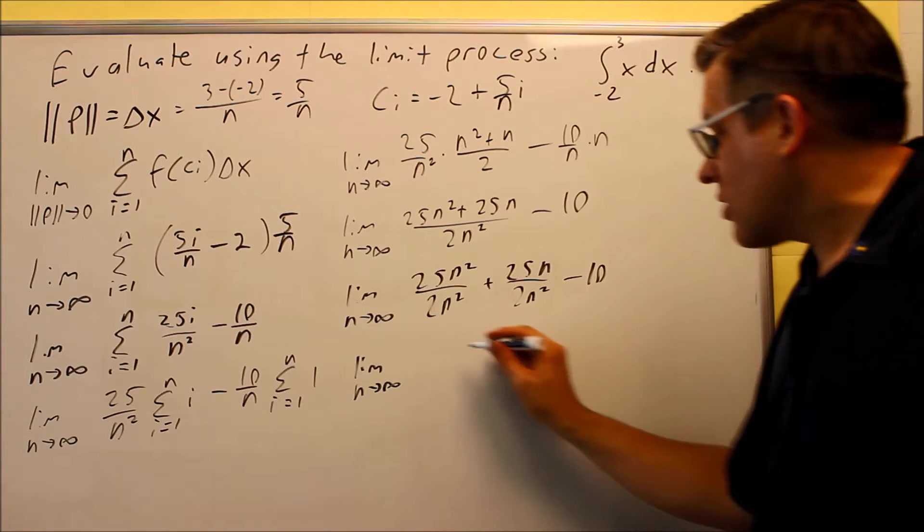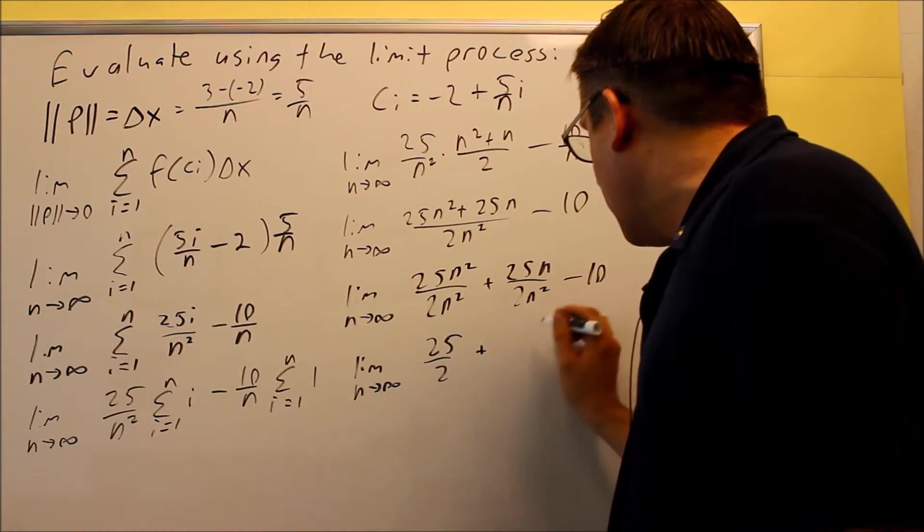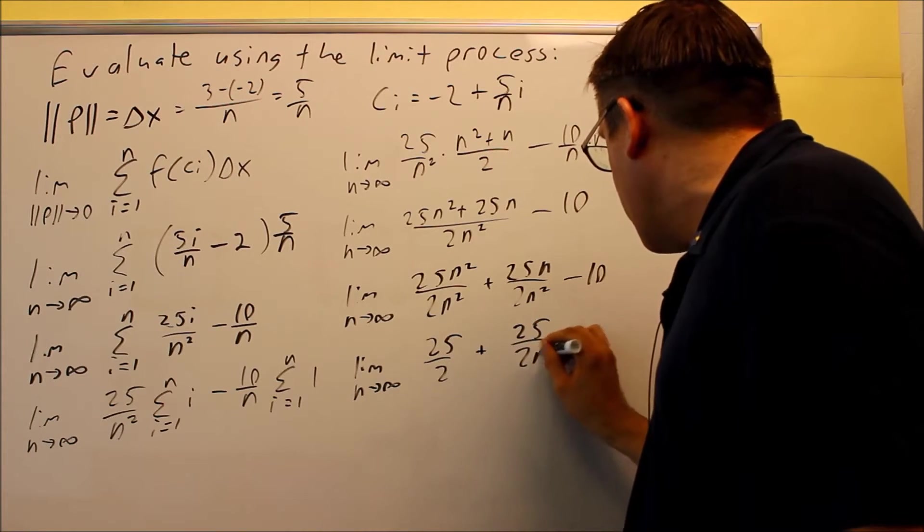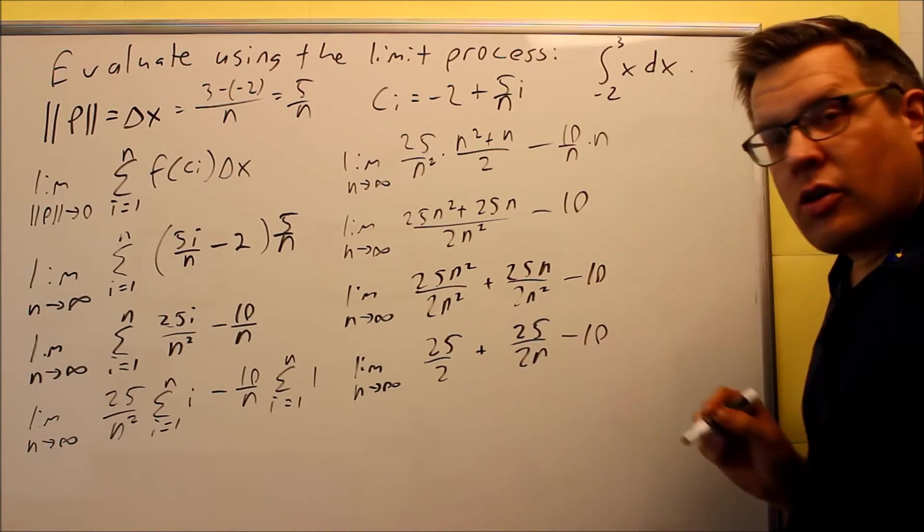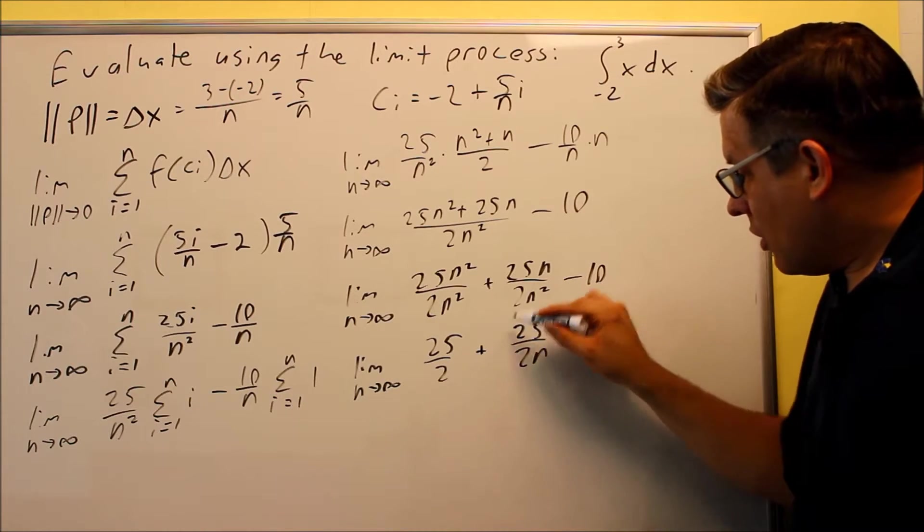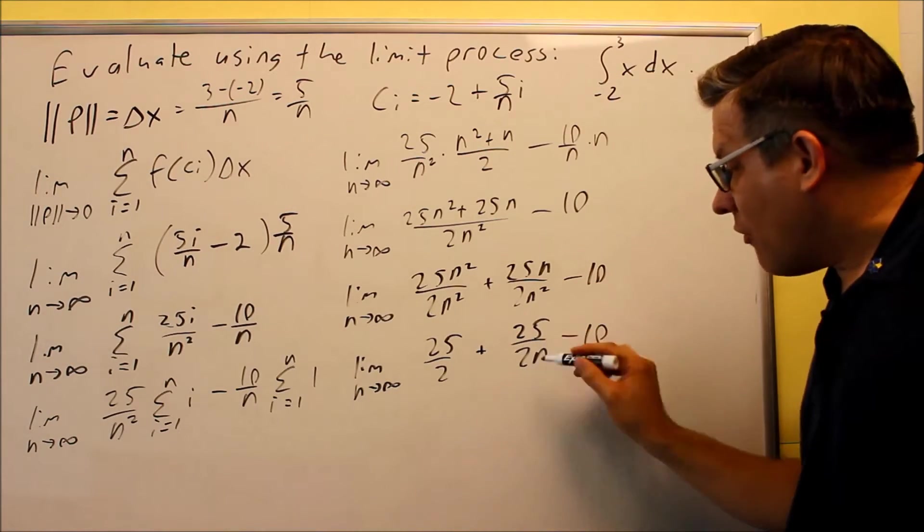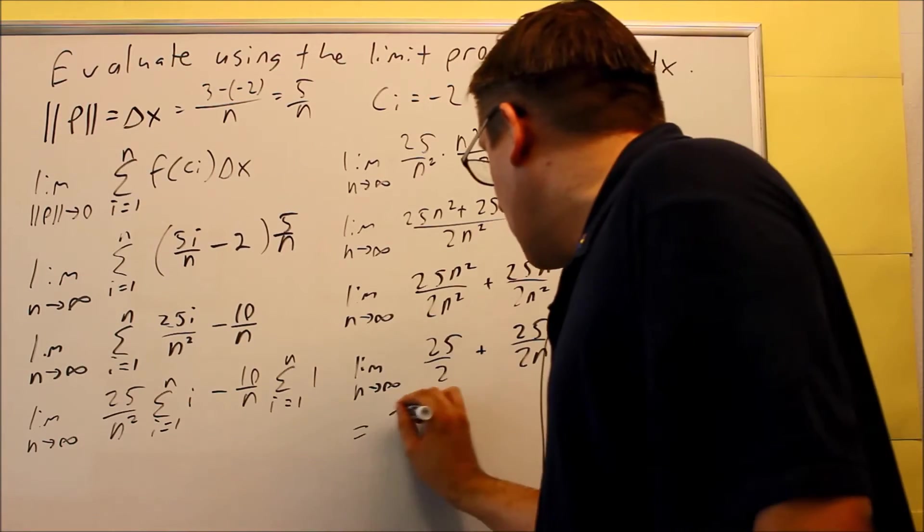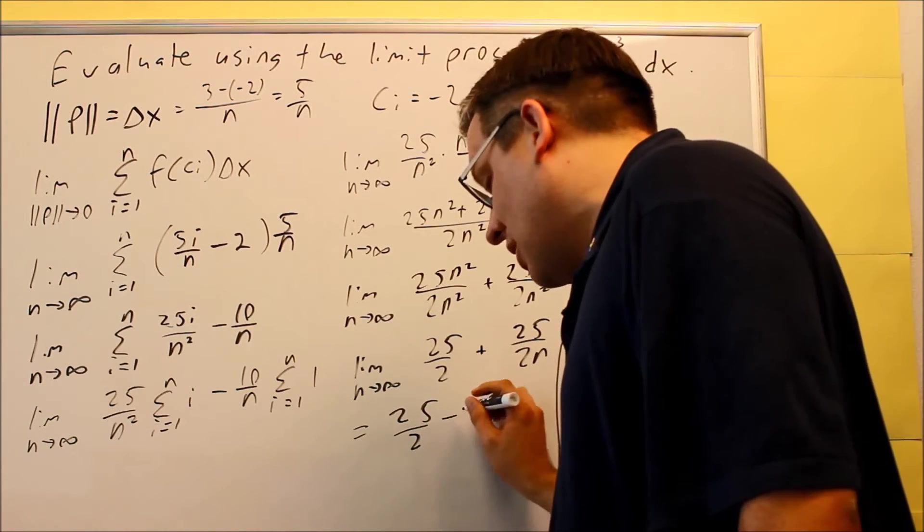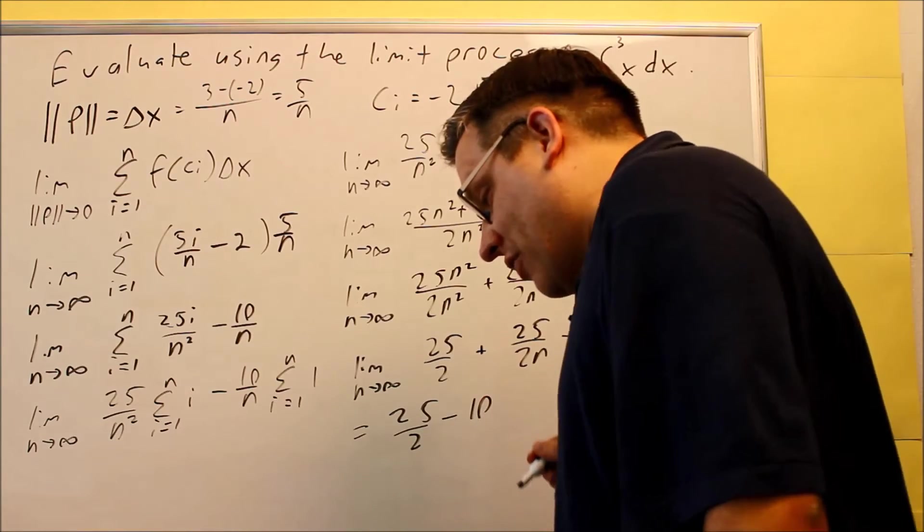The n squareds will both cancel out there, 25 over 2. And then, this, I get 25 over 2 n. And I get minus 10. Now, this part is going to go to 0 because I have a constant on top. And if I have a variable on the bottom, this is going to get very large. The whole thing is going to go to 0. So, what will happen is I'll just get 25 halves minus 10 left over.